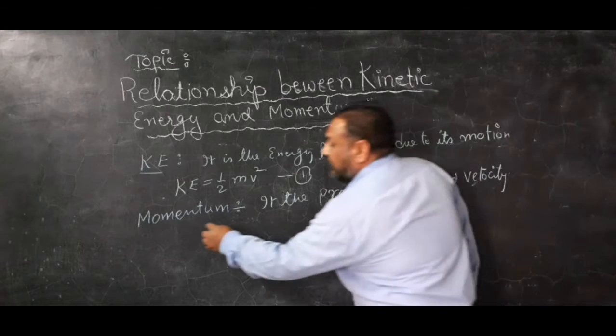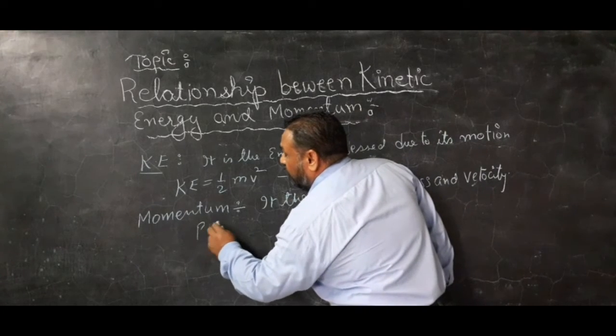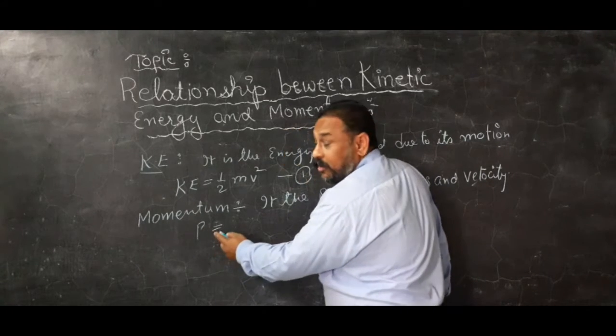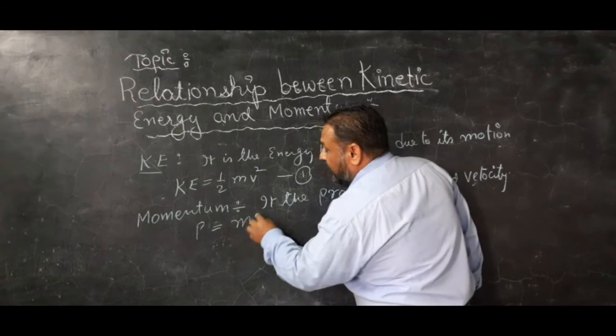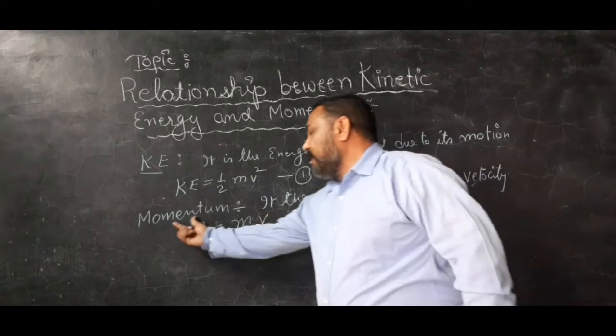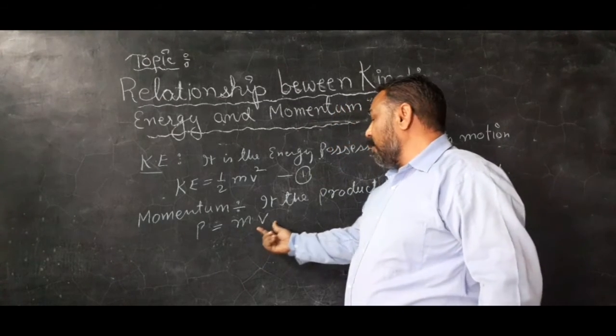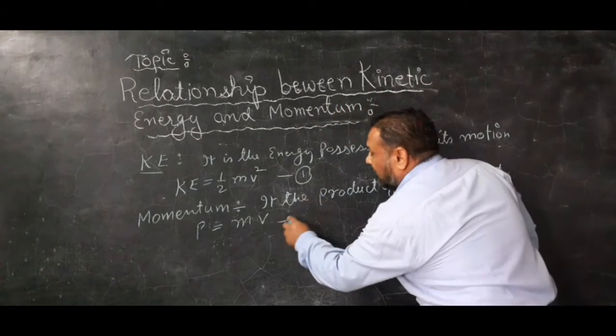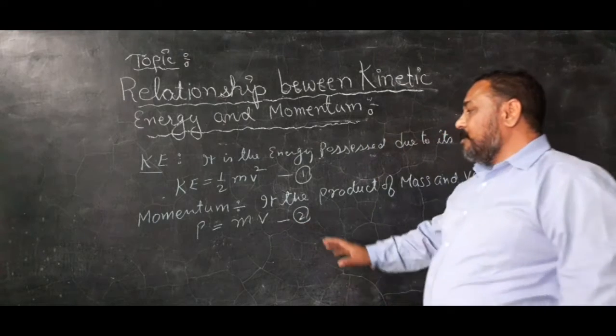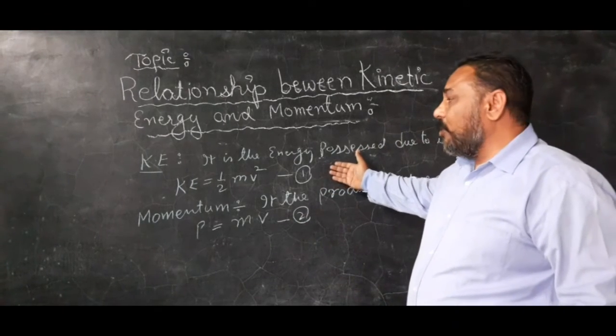That means the relation for it is: momentum stands for p, p equals mv. P stands for momentum, m stands for mass, and v stands for velocity.